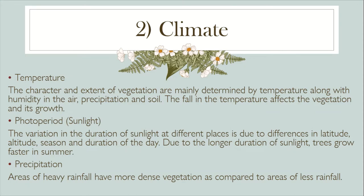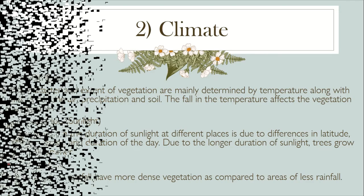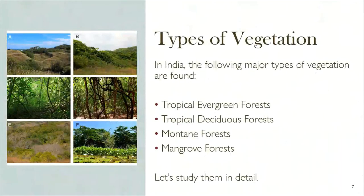Precipitation: areas of heavy rainfall have more dense vegetation as compared to areas of less rainfall. Types of vegetation in India — the following major types are found: first, tropical evergreen forest; second, tropical deciduous forest; third, mountain forest; fourth, mangrove forest. Let's study them in detail.